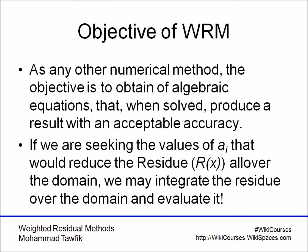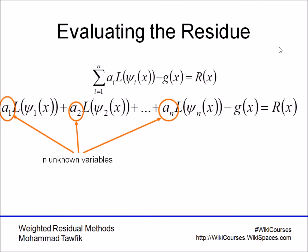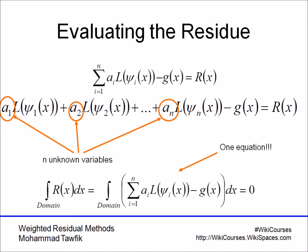The more these parts are balanced, the less residue we expect all over the domain. This idea is the focus of all weighted residual methods. So let's imagine that we expand the series in which we have n unknown variables, a_i. Now if we integrate the residue all over the domain, we are actually integrating the functions ψ(x) under the operator minus g(x) over the domain, and then we force it to be equal to zero. This forcing is what all the weighted residual methods are about.